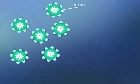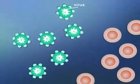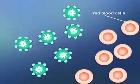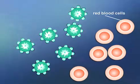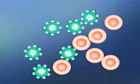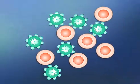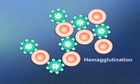When certain viruses, such as the measles virus, are mixed with red blood cells, the virus particles react with structures on the surfaces of the red blood cells, causing hemagglutination.